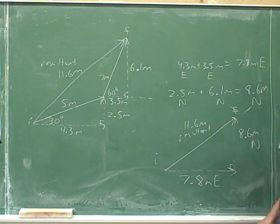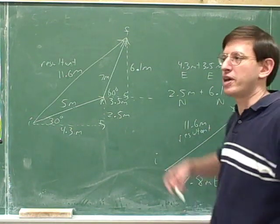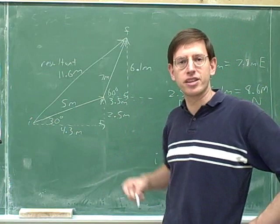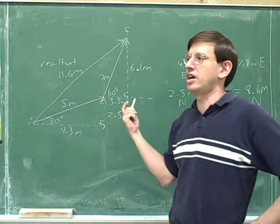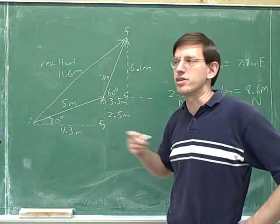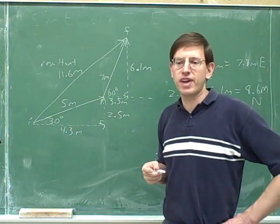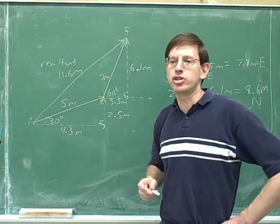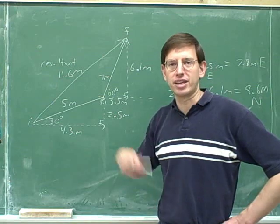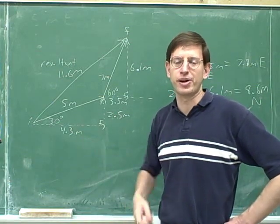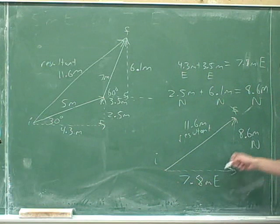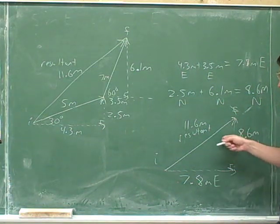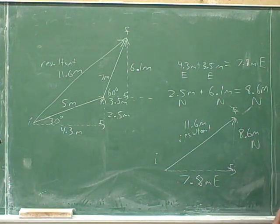By working out the components, we were able to figure that out. You can start to see the basis of what I've been calling the clever trick that physicists use. Very often, physicists have to work with two vectors that are not parallel to each other, and their trick is to break those vectors into components. Then the two horizontal components are parallel and can just be added, and the two vertical components are parallel and can just be added.